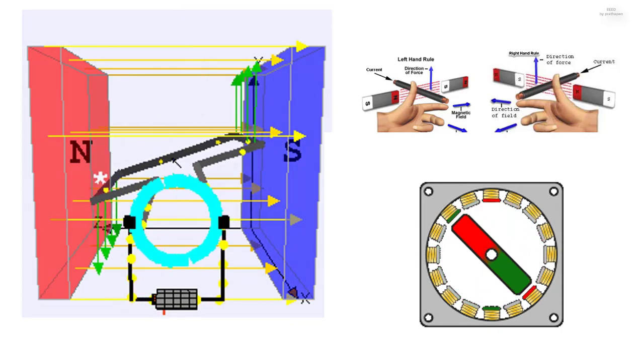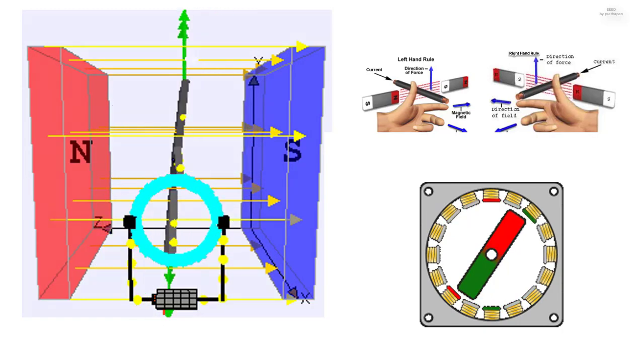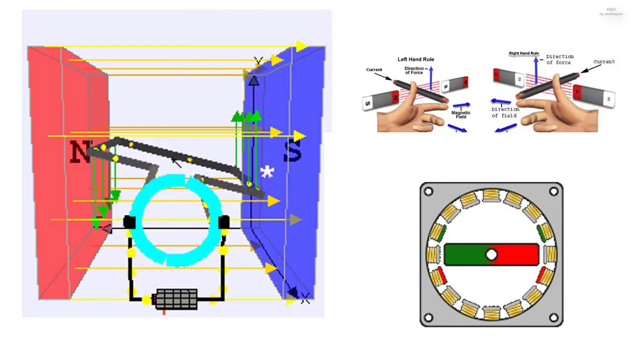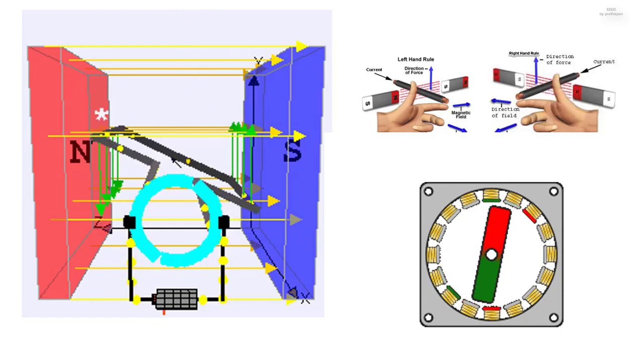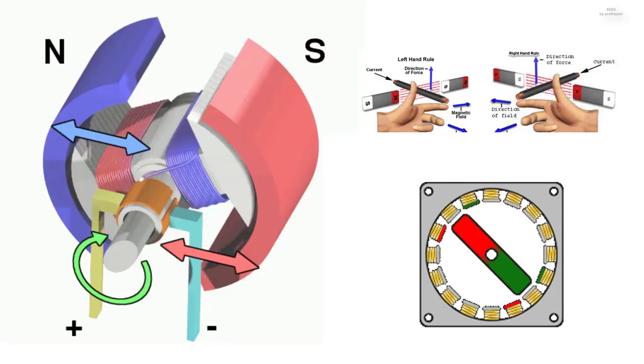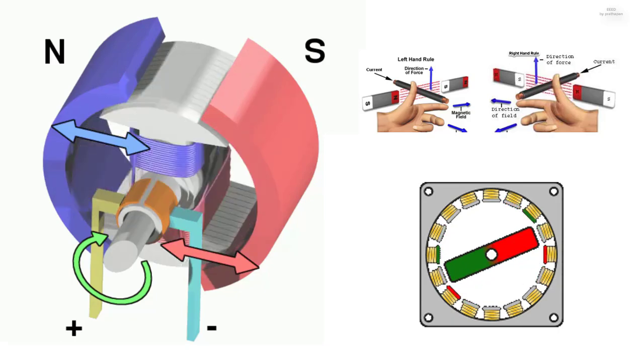Different hands need to be used for motors and generators because of the differences between cause and effect. In an electric motor, the electric current and magnetic field exist, which are the causes, and they lead to the force that creates the motion, which is the effect, and so the left hand rule is used.